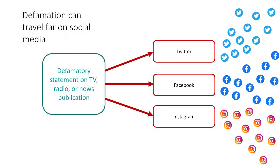Generally speaking, the more times a defamatory statement is viewed, the greater the number of impressions and the greater the scope of potential impact of that statement on the reputation of the defamed party. Social media may play a role even when the defamatory statement is made in a more traditional venue. An at-issue statement may first appear in TV, radio, or newspapers and then spread to online platforms, increasing the number of people who are exposed to the defamatory statement.